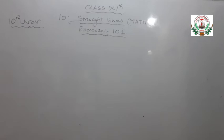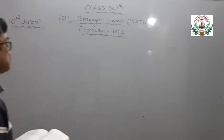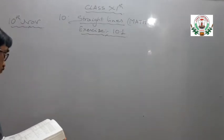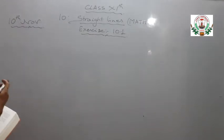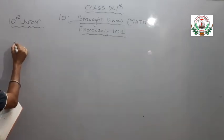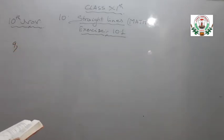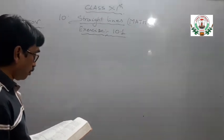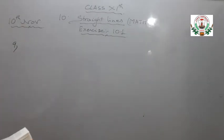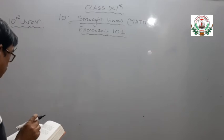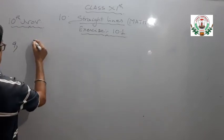Good morning students. Now let's come to the other questions of exercise 10.1, question number 9. Without using the distance formula, show that the points (-2, -1), (4, 0), (3, 3) and (-3, 2) are the vertices of a parallelogram.